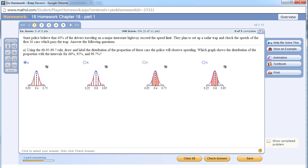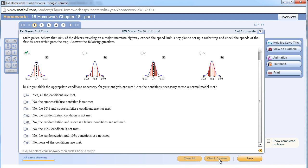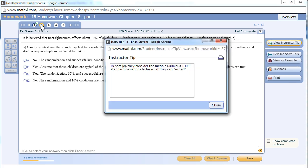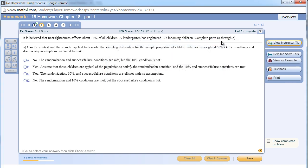One thing to notice is we need to check our conditions, and they label all the conditions for you: randomization, 10%, and success failure condition. They mention selecting the first 30 cars, the plan to set up a radar trap and check the speeds of the first 30 cars. So no, this is not random at all. The randomization condition is not met. Always make sure it says they're randomly selected. If it doesn't, then you can't say the randomization condition is met.